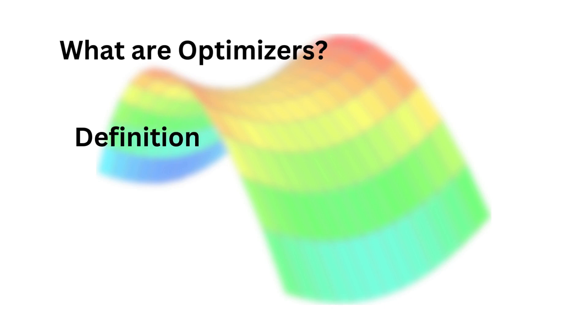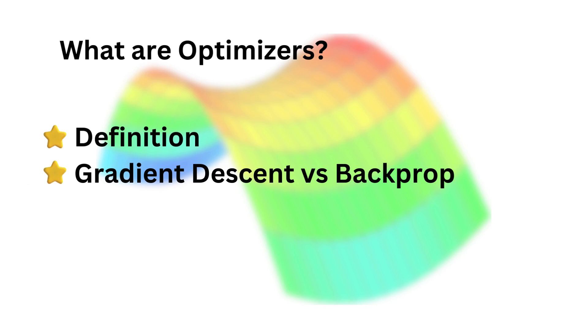You might be asking yourself right now, what exactly are optimizers in the context of deep learning? In today's short video we'll answer that question. We'll first define in simple terms what are optimizers in deep learning and where they sit in the overall architecture.